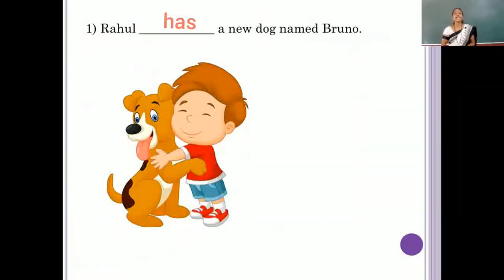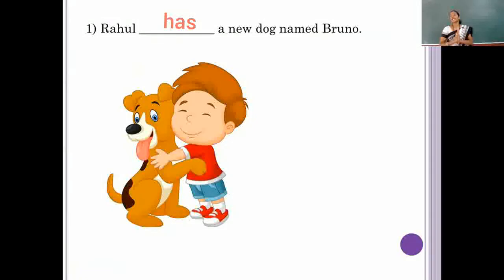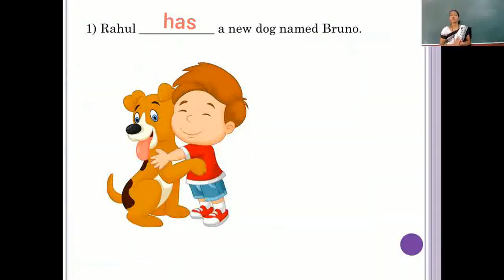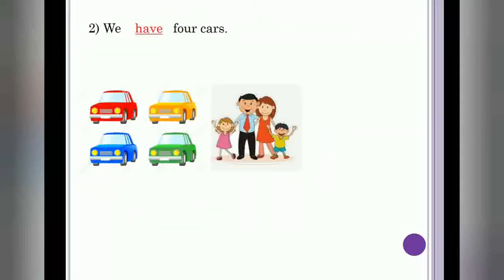Here, one more sentence I have taken. Then we can say here, Rohan has a dog named Bruno. Here we can use has verb to show Rohan's belonging.